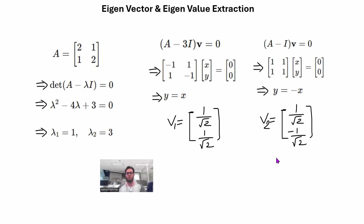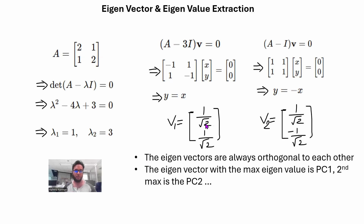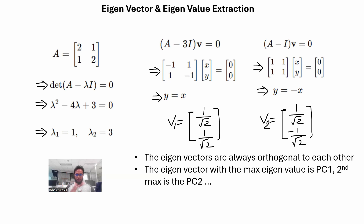Eigenvectors are always orthogonal to each other — the dot product of v₁ and v₂ is zero. The eigenvector with the maximum eigenvalue (3 in this case) is PC1, the first principal component, and the second highest corresponds to PC2. If you are familiar with PCA (principal component analysis), you will recognize this. I will make a separate video on PCA and its applications in bioinformatics and genomics.